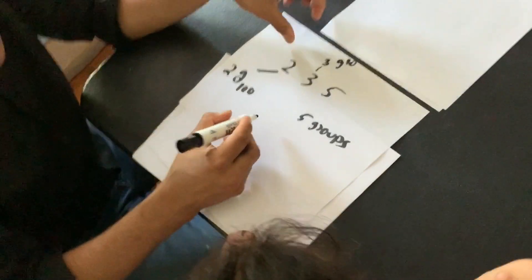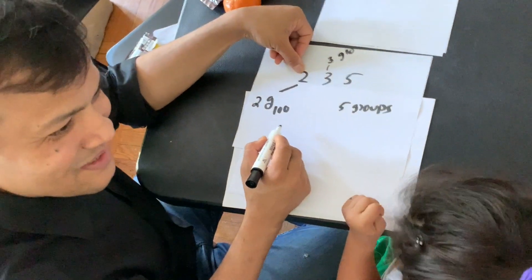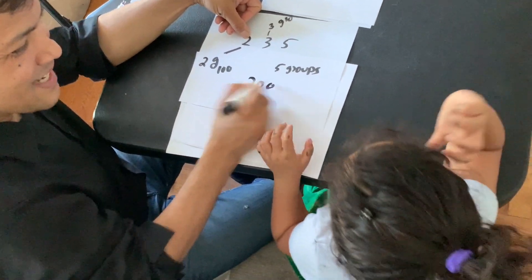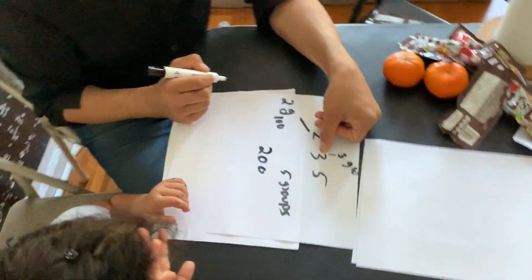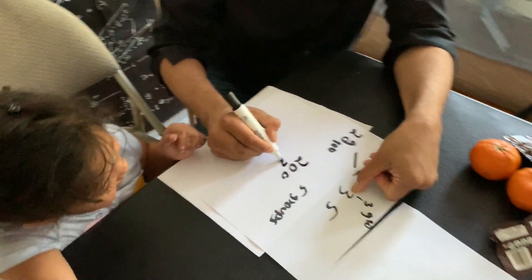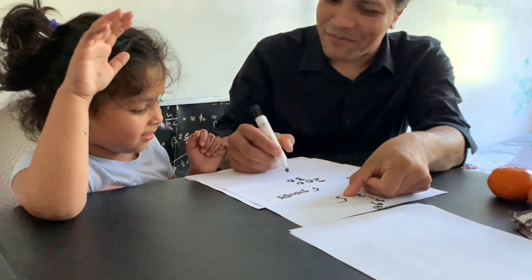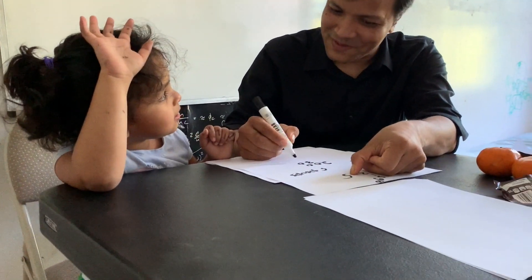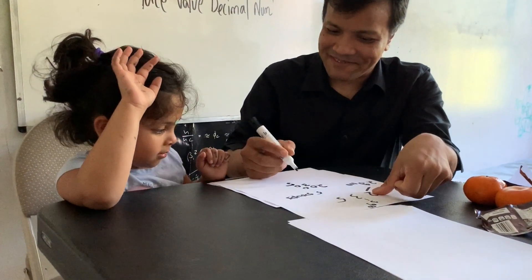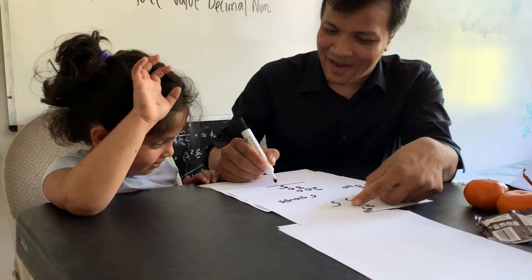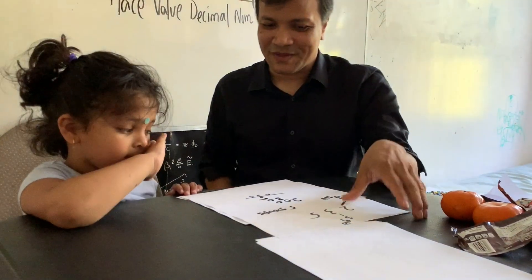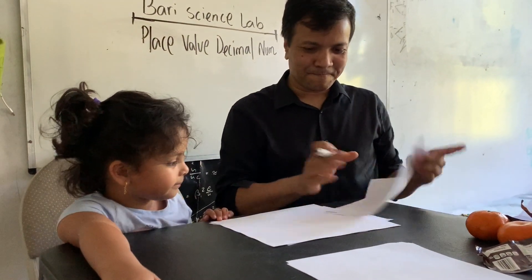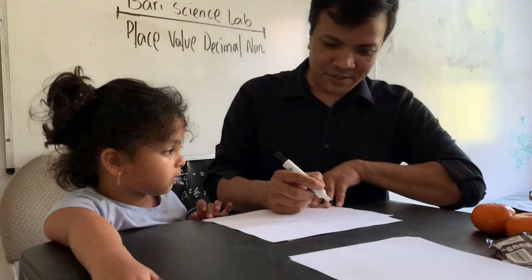So how can you write that? Two groups of hundred, three groups of ten, and five groups of one. So that's five, three, two — 235. Now what do you notice? What side is this? Right — good. What is the place value of this one?